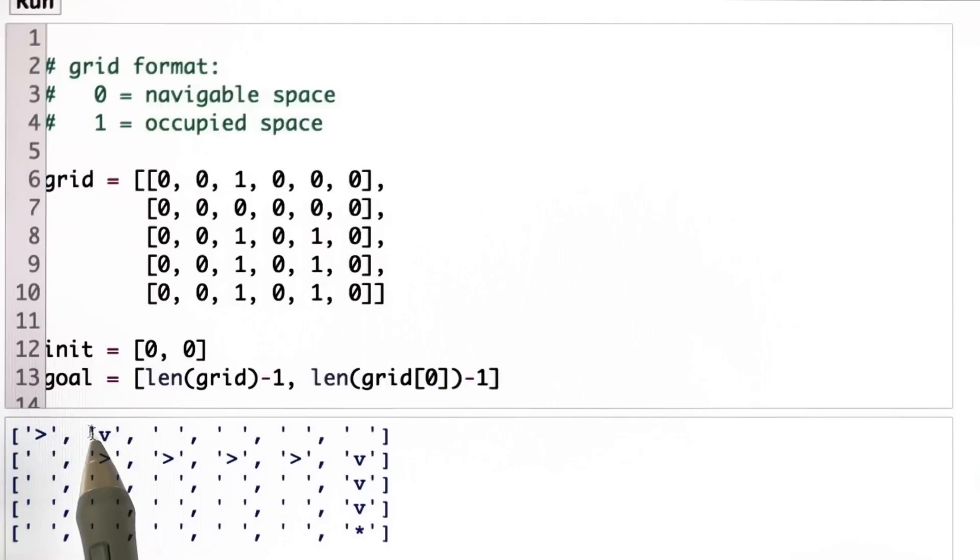Here I'm going to go down. This little V is an arrow down. An arrow to the right again, an arrow to the right, an arrow to the right, an arrow to the right, down, down, down. And at the end we find a star, which indicates the location of the goal.